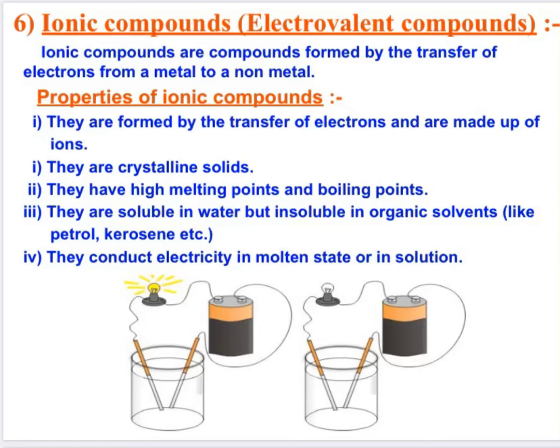Now we are going to study the properties of ionic compounds. The first property is that ionic compounds are formed by transfer of electrons and are made up of ions. Next, they are crystalline solids — they exist in the form of crystals. They are brittle, meaning you can break them into pieces by applying pressure. They also have high melting point and boiling point due to strong attraction between the ions.